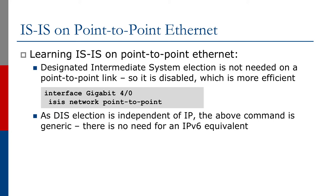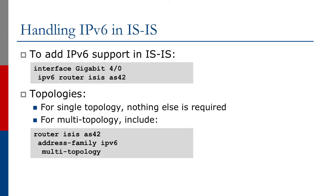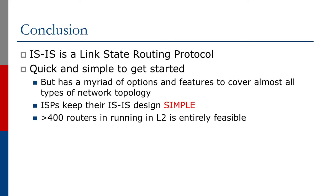The DIS selection is independent of IP, and the above command is generic — there is no need for an IPv6 equivalent. To add IPv6 support in IS-IS, all we need to do is go to the interface and do 'ipv6 router isis'. There's no other configuration needed if we're running in a single-topology-based network. For multi-topology, we need one more configuration line — going into the IS-IS sub-configuration for IPv6 and adding multi-topology. This will cause a router to create a separate topology database holding all the IPv6 destinations.